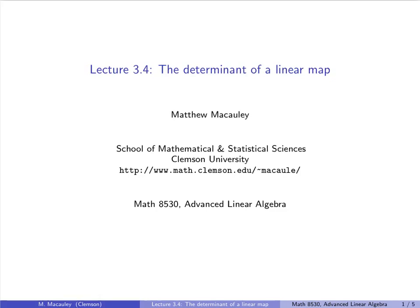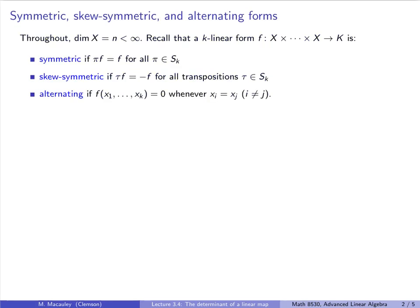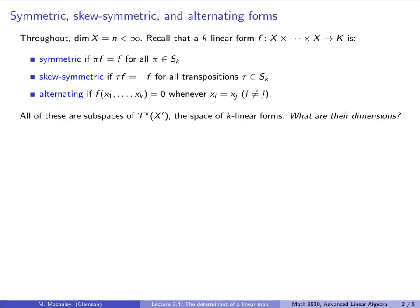Welcome to lecture 3.4: the determinant of a linear map. Throughout this lecture we will assume that X is an n-dimensional vector space. In the last two lectures we learned about k-linear forms, and if all of the factors of the input are the same vector space, then we can define what it means for f to be symmetric, skew-symmetric, and alternating.